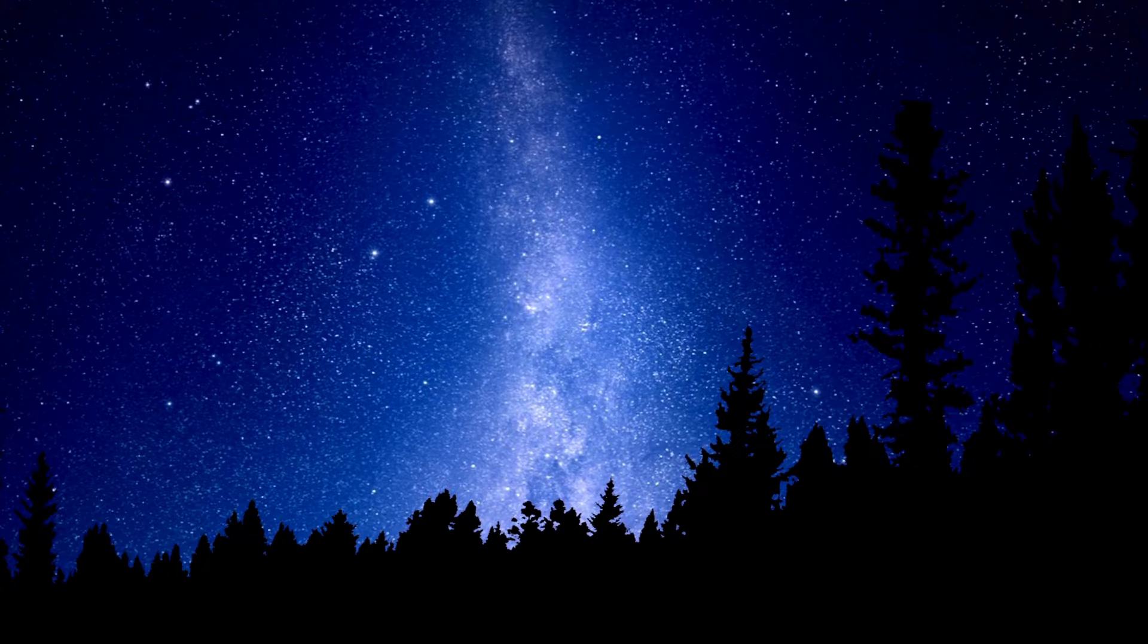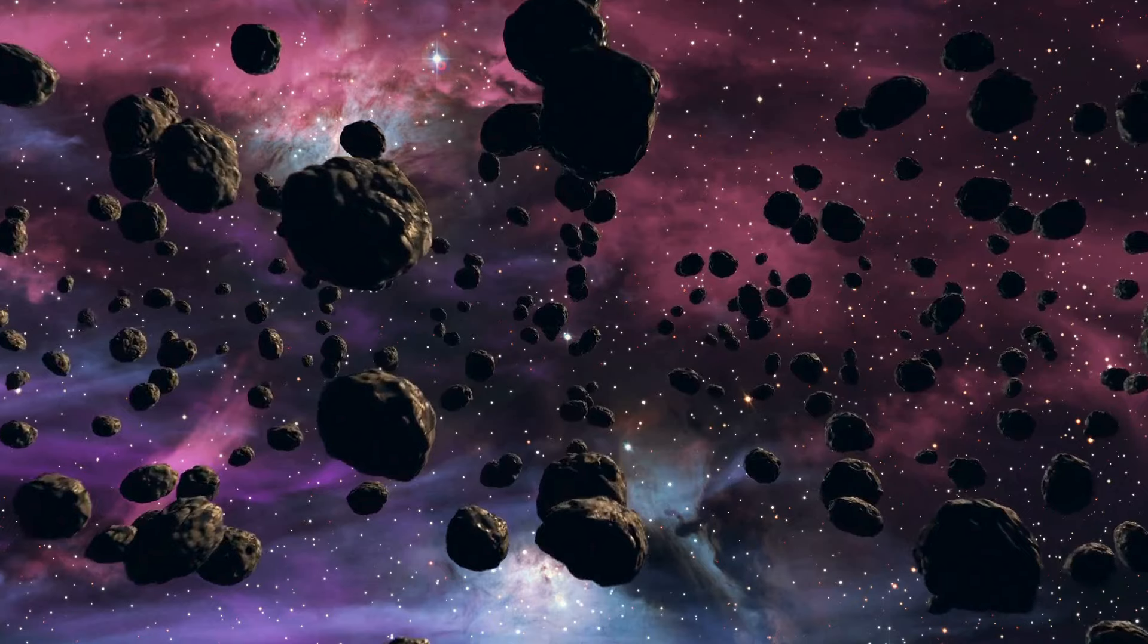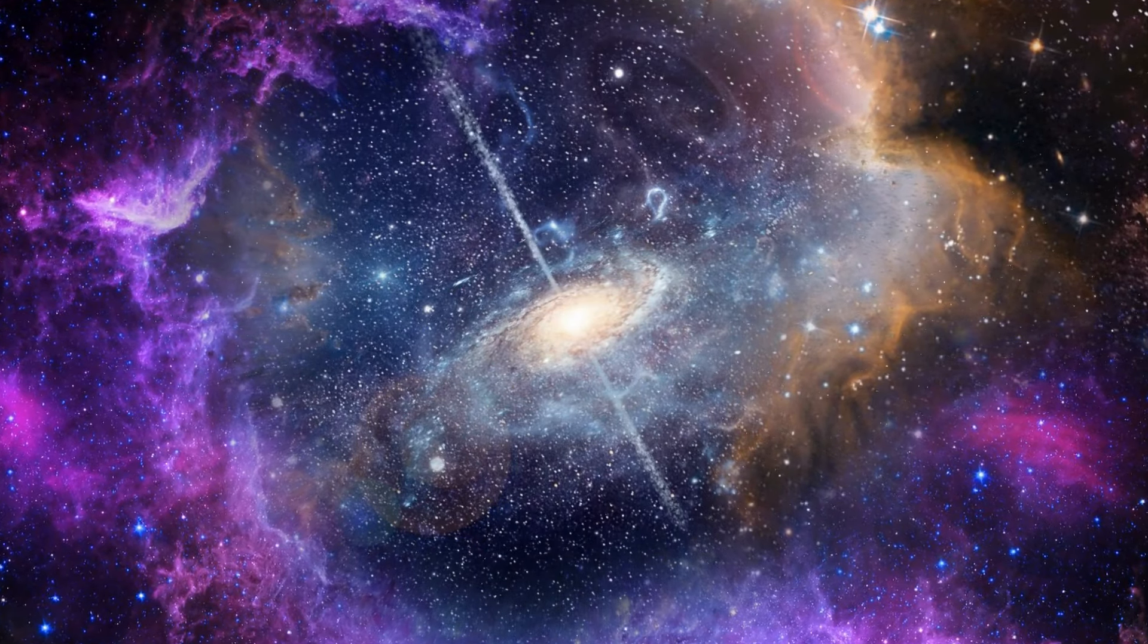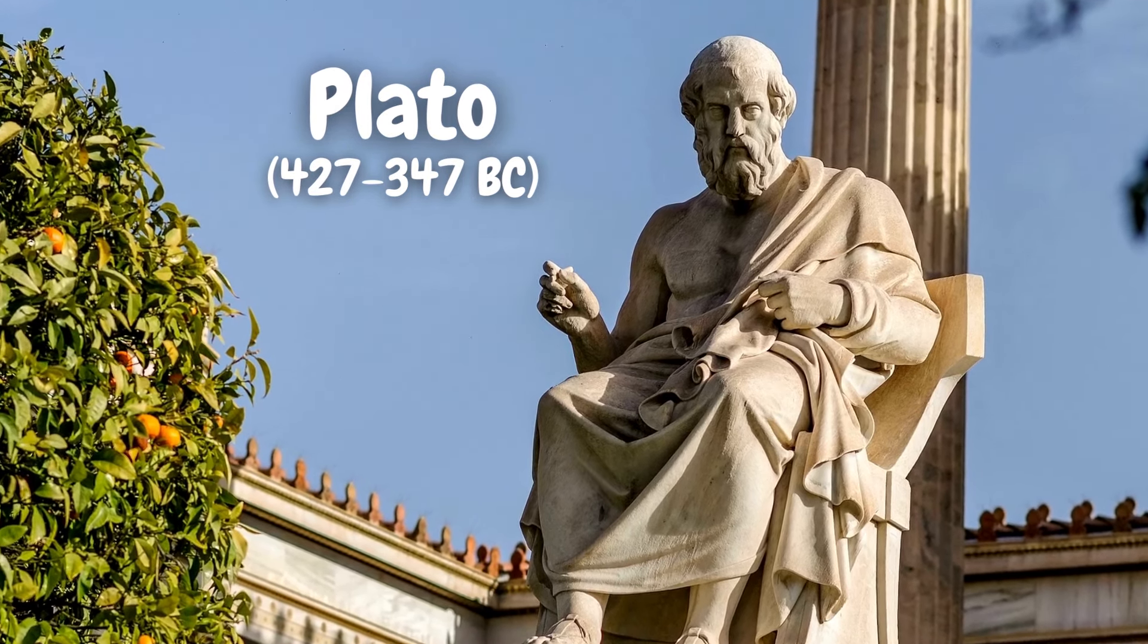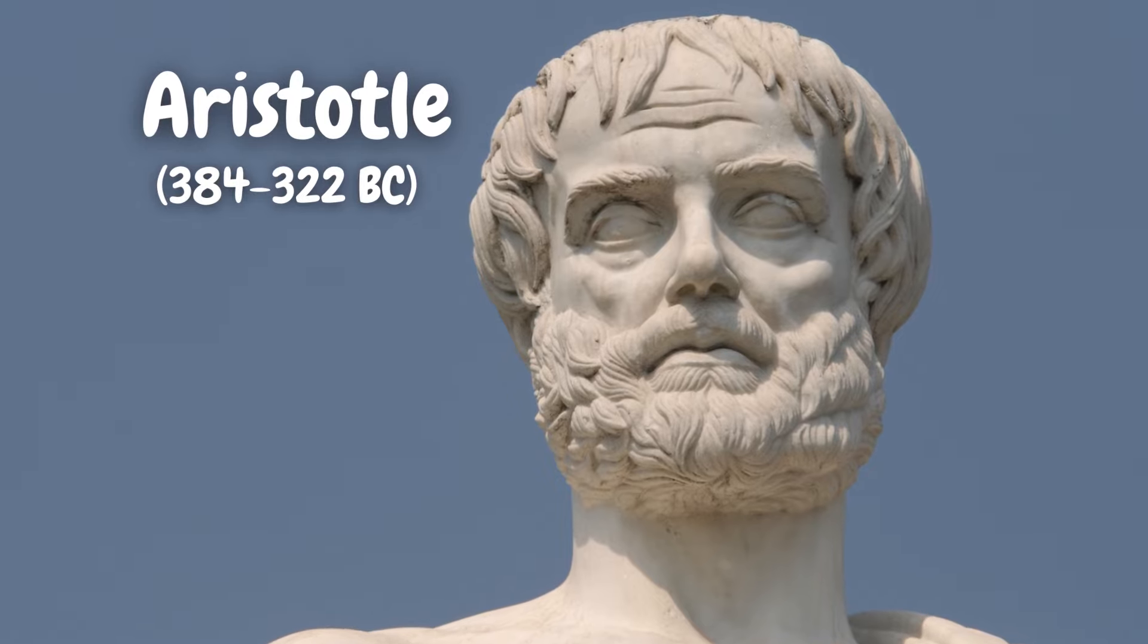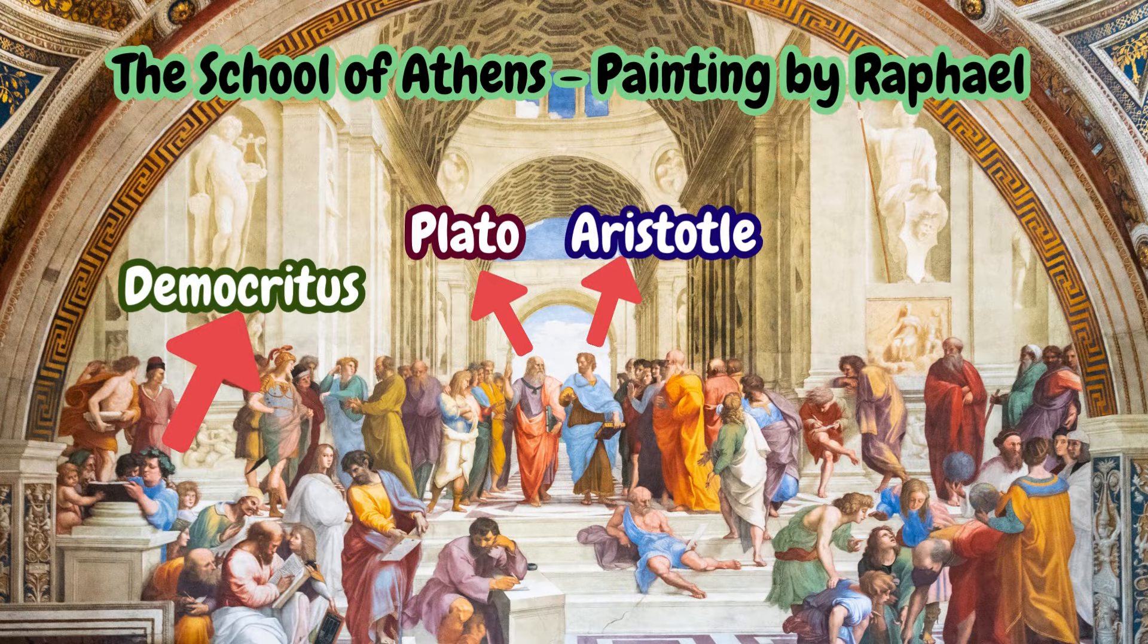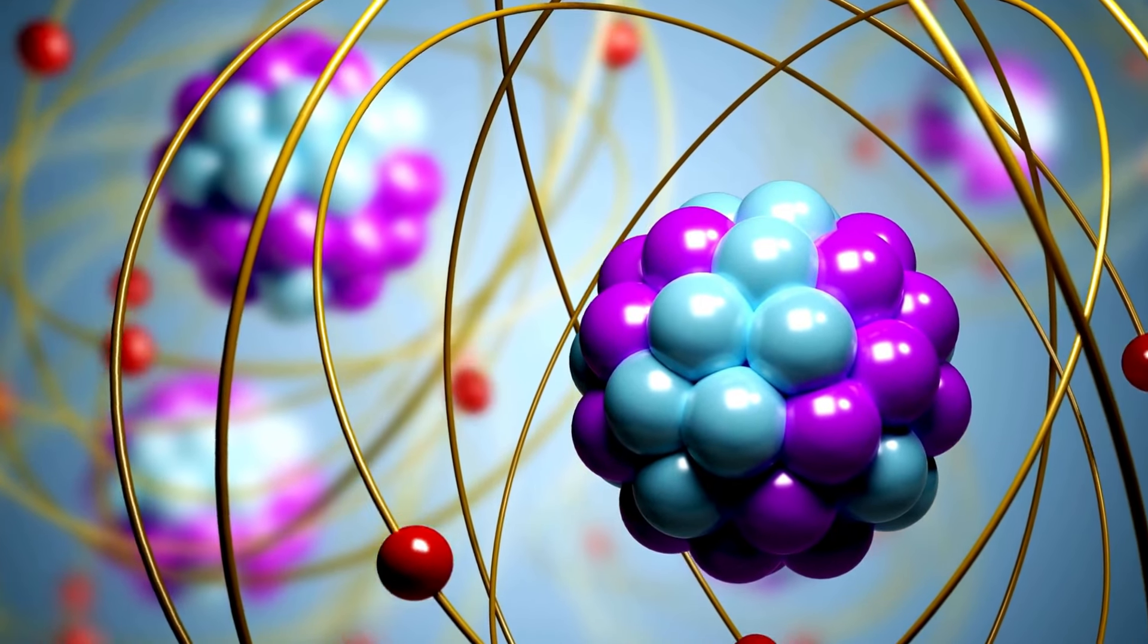Democritus's atomistic philosophy proposed that the variations in the arrangement and combination of these indivisible particles gave rise to the diversity of substances in the universe. Even though Democritus lived before Plato (427 to 347 BC) and Aristotle (384 to 322 BC), who were also Greek philosophers, they were contemporaries to some extent.